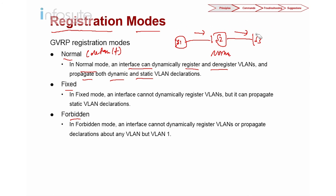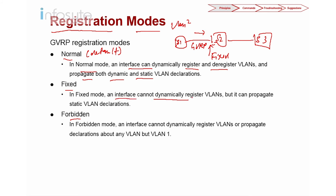Next is fixed mode, configured on the trunk port. If Switch 2 is configured as fixed mode, GVRP registration from Switch 1 will be received by S2, but S2 will not create a dynamic VLAN. So VLAN 2 will not be dynamically created on S2. However, S2 can propagate its own static VLAN declarations — for example, if VLAN 3 is statically created on S2, it will be sent to S1, and S1 in normal mode will register VLAN 3.